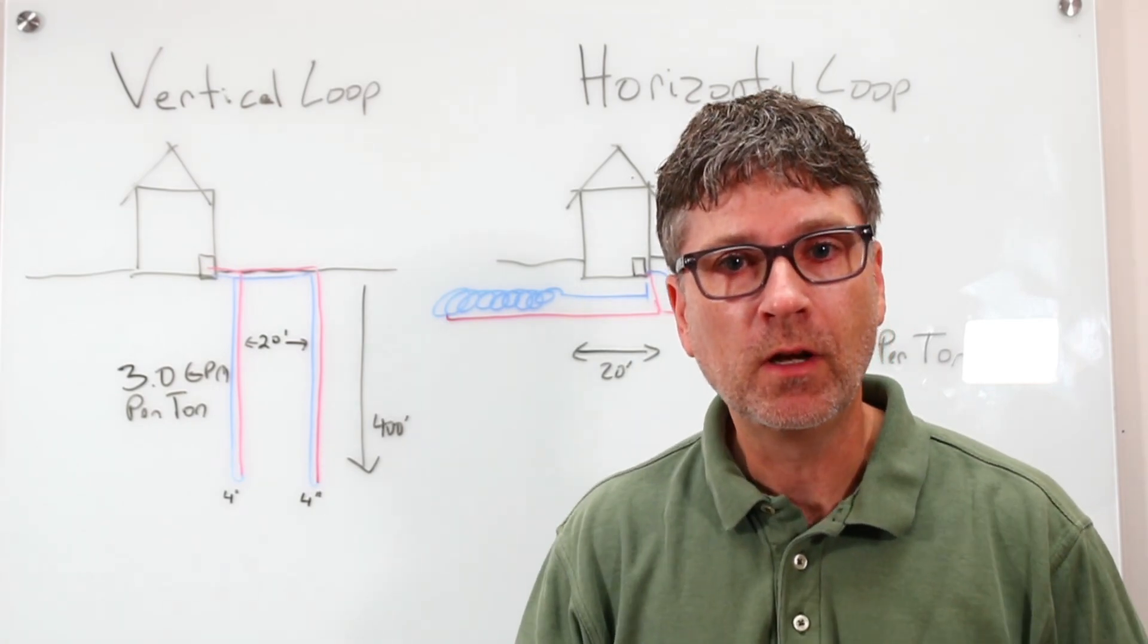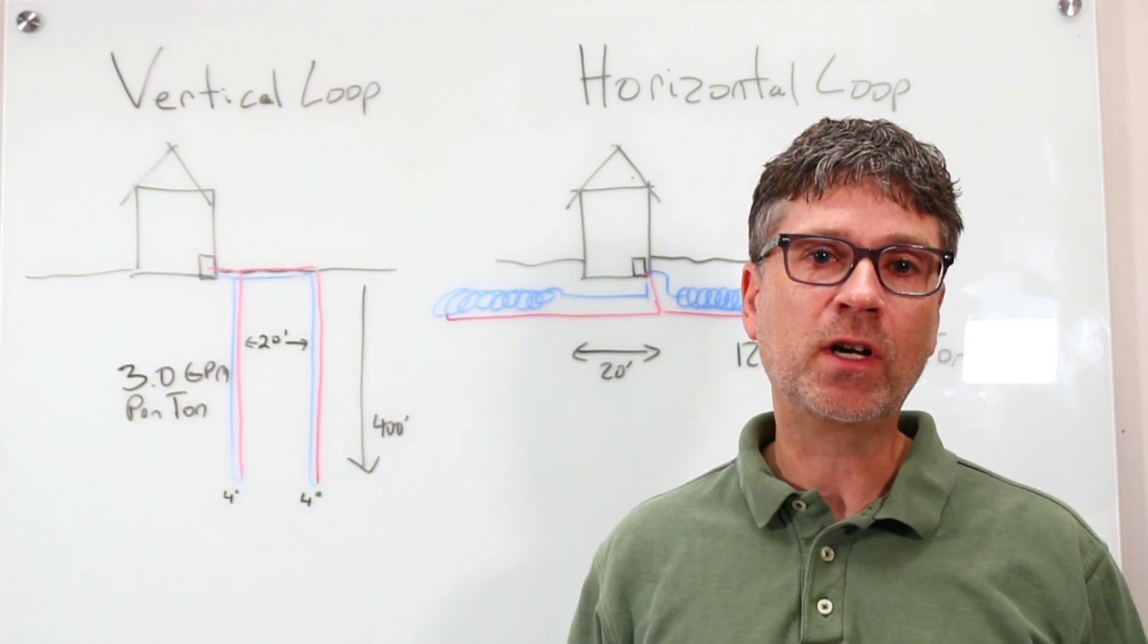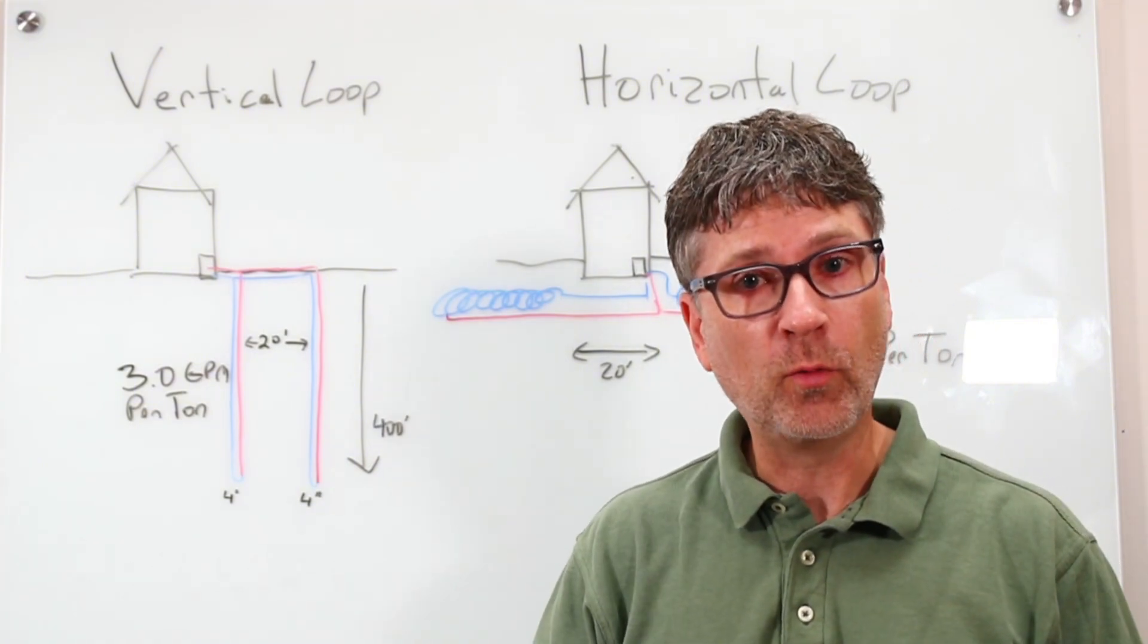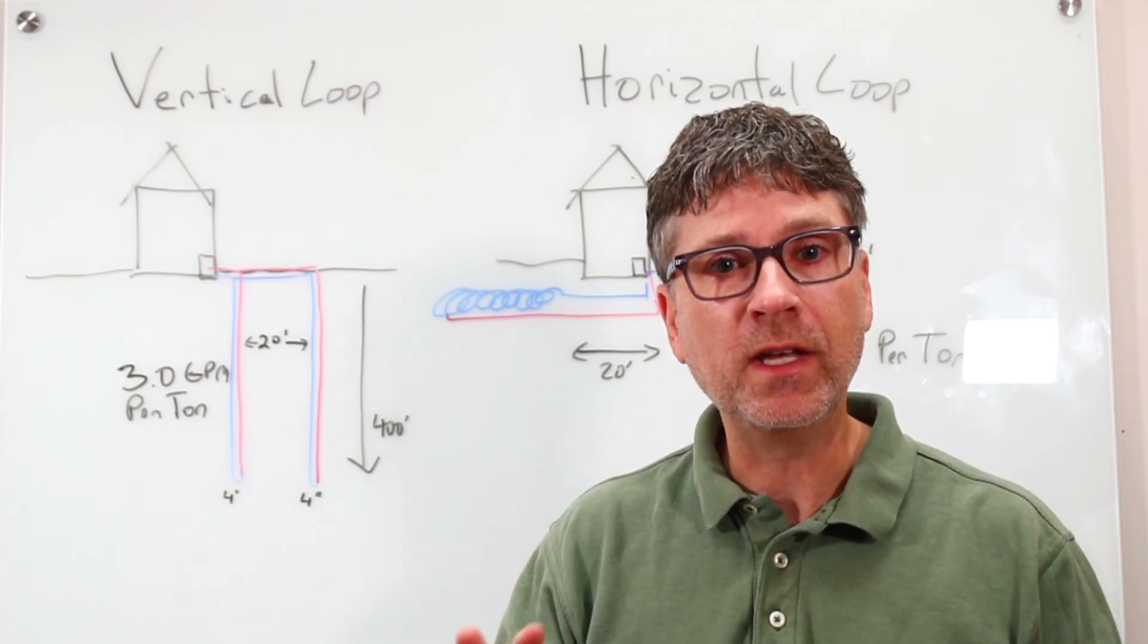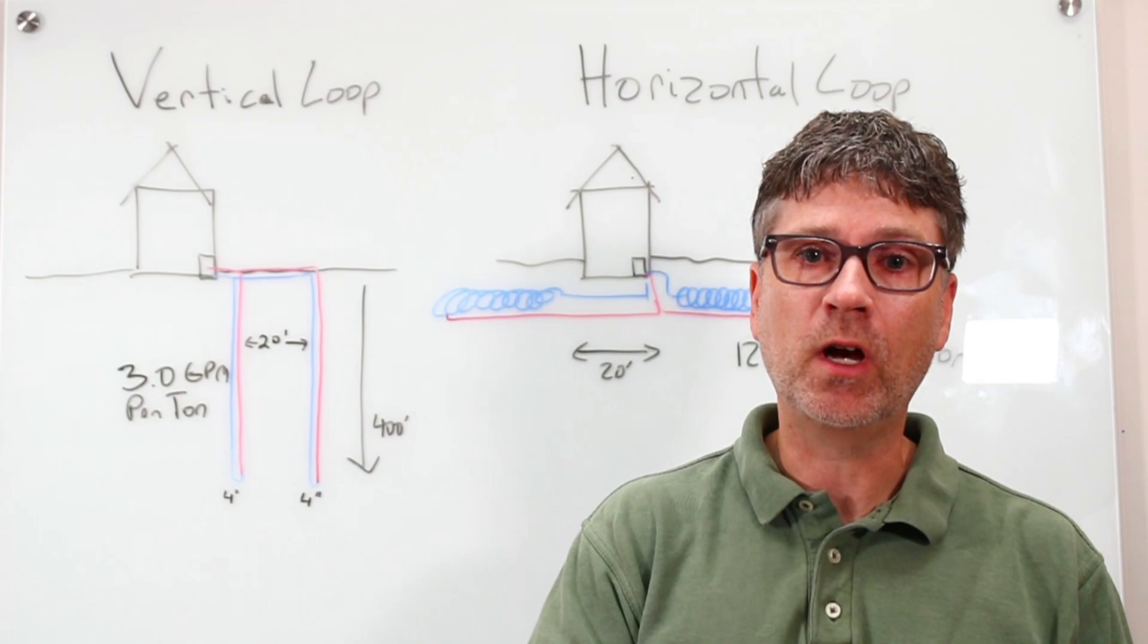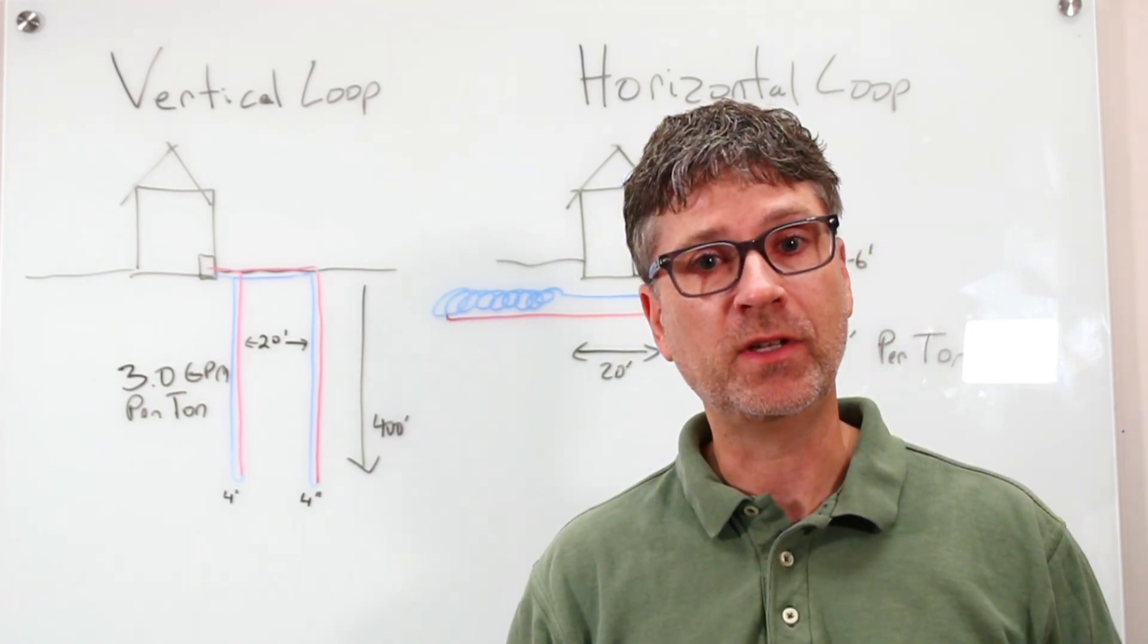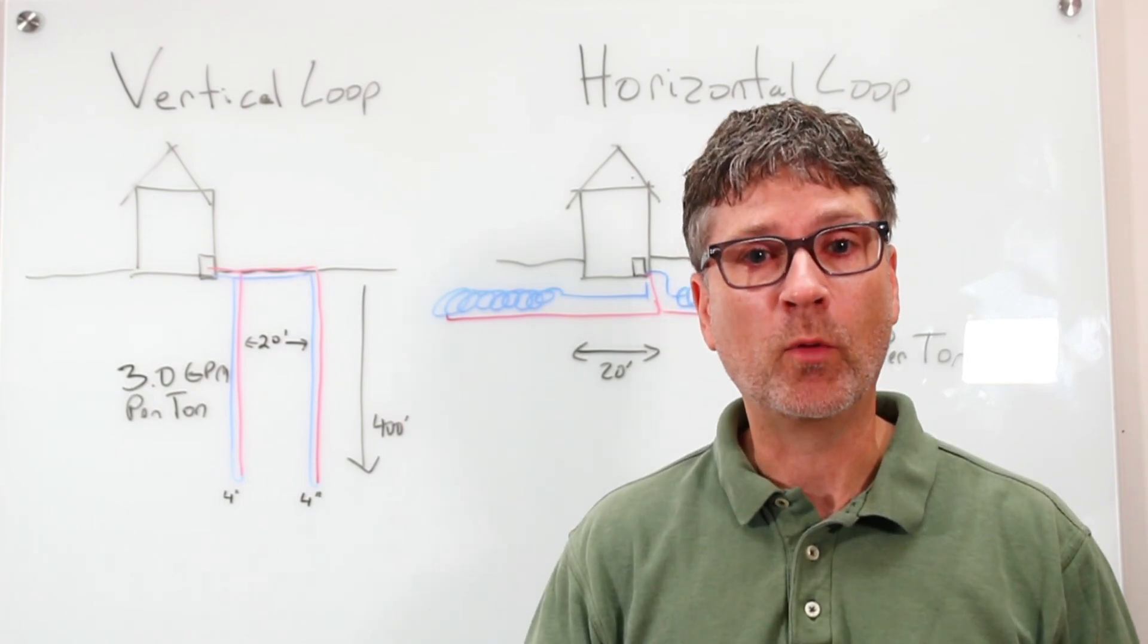One case in particular was really very interesting. In that case we found a four-ton system with vertical well loops, I'll show you what that is in just a second, but there were two big issues. First, the system needed one circuit per ton but only had three circuits, not enough for four tons. It's just not enough for proper water flow.